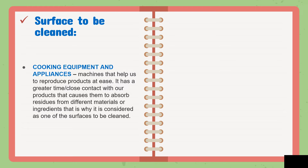As discussed earlier, our appliances include the oven, microwave, blender, electric mixer, toaster, and all small appliances — these all need to be cleaned. The storeroom is a space for storing goods or supplies. In fast food establishments, storerooms hold bread, rice, spaghetti noodles, and other kitchen ingredients. They always make sure it is clean and sanitized because rats or cockroaches could enter and damage the ingredients stored inside.